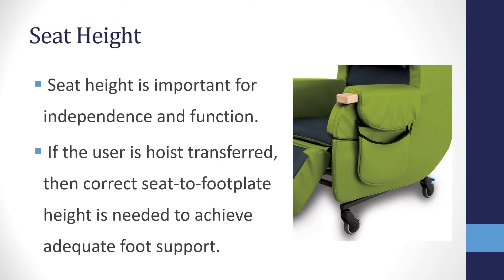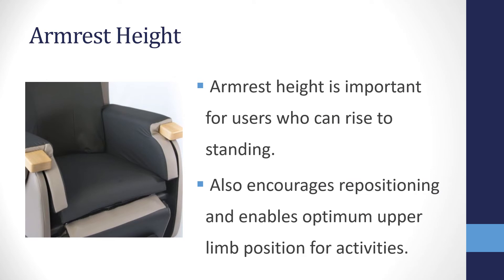Seat height is important for maintaining independence and function if the user is ambulant or is still able to rise to stand or for transfers. If the chair seat height is too high, the user will be unstable when they rise to stand, or it will encourage a posterior pelvic tilt as the user seeks foot support. If the seat height is too low, they may not have adequate strength to complete a sit to stand. If the user is hoist transferred, then correct seat-to-footrest height is needed to achieve adequate foot support, which is critical for pelvic and upper trunk stability further up the body segments. We also can't forget about armrest height — this is important for users who can still rise to standing as it allows them to push up and out of the chair. It also encourages repositioning and enables optimum upper limb position for activities.